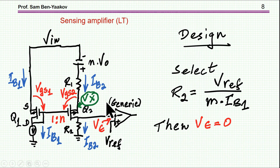In this balance situation, N Vout is equal to IB2 times R1. IB2 times R2 is equal to V reference and everything is stable.